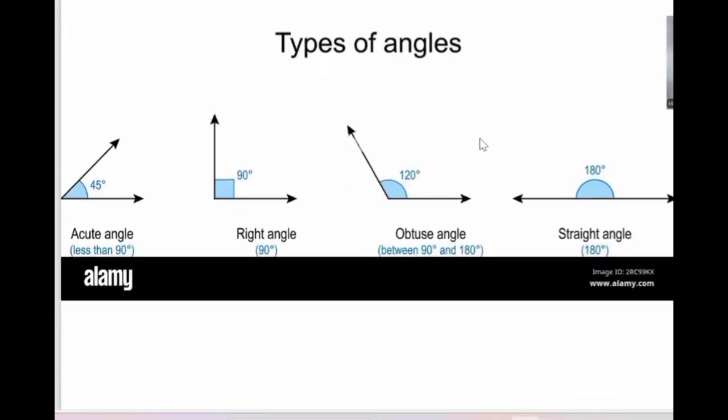Types of angles: we have acute, right, obtuse, and straight. An acute angle is less than 90 degrees, a right angle is equal to 90 degrees, an obtuse angle is greater than 90 degrees, and a straight angle is equal to 180 degrees.